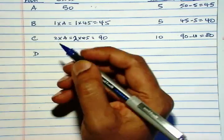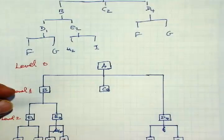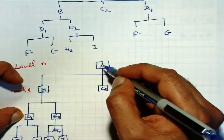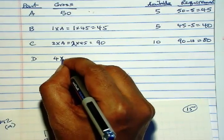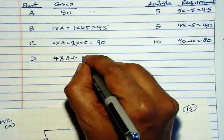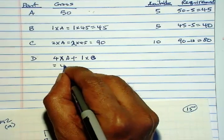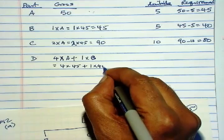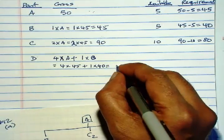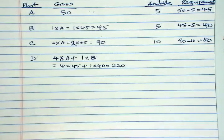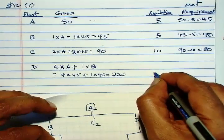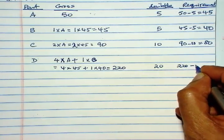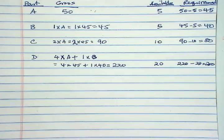Next is D. Now, D appears in two different places. We need 1 unit of D for each B, 4 units for each A. So 4 times A plus 1 times B. So that is equal to 220. And now, we have how many units of D is available? We have 20 units of D available. So 220 minus 20 is 200 is the net requirement for D.